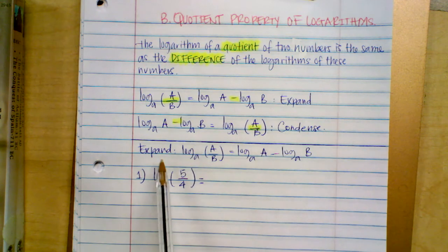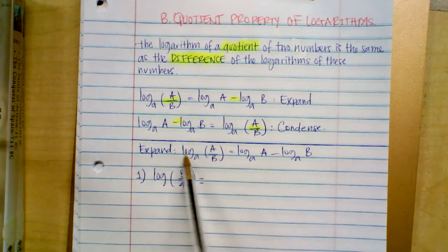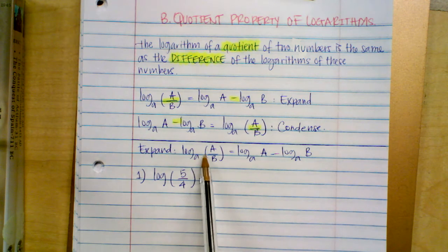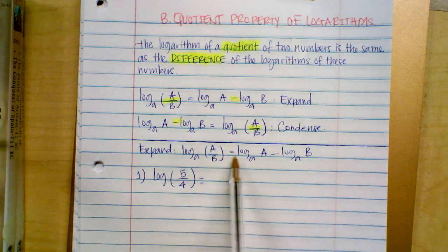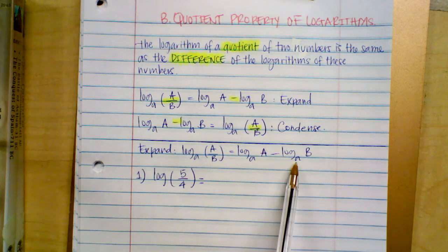Let's practice the expanded form. We start with a single log. Log base A of (A over B) is equal to log base A of A minus log base A of B.